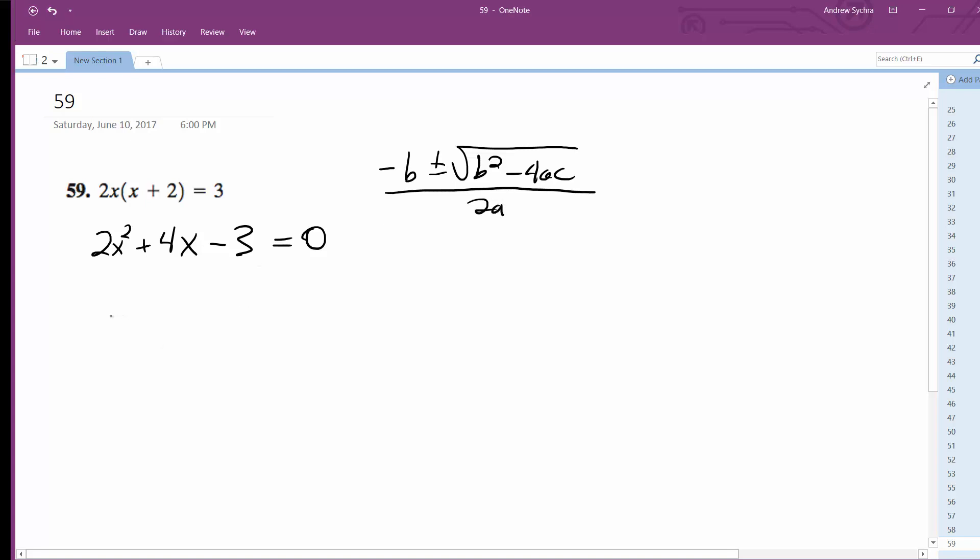So what I'm going to get is opposite of b, which is negative 4, plus or minus the square root of b squared, which is 16, minus 4 times a, which is 2, and then c is negative 3.